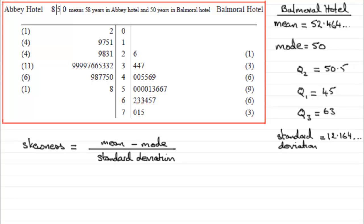Okay then, so what we've got to do in this part is work out the skewness of our distribution for the Balmoral Hotel by using mean minus mode all divided by standard deviation.